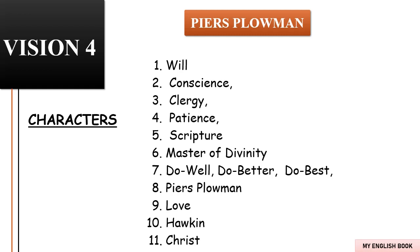Soon after departing on their journey, Conscience, Patience, and Will come across a man named Hawkins. Will immediately notices that Hawkins's coat is full of stains. Hawkins explains that the coat belongs to Christ, and the stains are his own frequent sins. Although he has tried to wash the coat many times, it doesn't stay clean for more than a few moments before it is splattered with stains again. Patience instructs Hawkins to use the combination of contrition, Do Well, Do Better, and Do Best to launder the coat effectively: contrition will scrape the scum from the coat, Do Well will wash it, Do Better will scrub it, and Do Best will ensure the coat always stays clean. Hawkins then begins to lament, overcome with guilt for his past sins. This is the end of Vision Four.